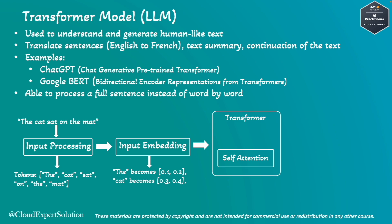After input embedding, the next step is self-attention, or the attention mechanism, which is the core of the transformer model. It helps the model focus on different parts of the input text to understand the context and the relationship between words. In our example, the model looks at the sentence and decides which words are important. From 'the cat sat on the mat,' it might focus on 'cat' and 'mat' to understand the main idea, as those are the two key concepts found in the attention mechanism phase.